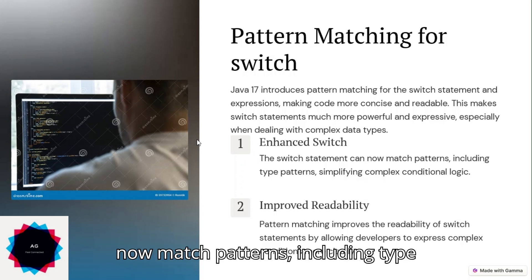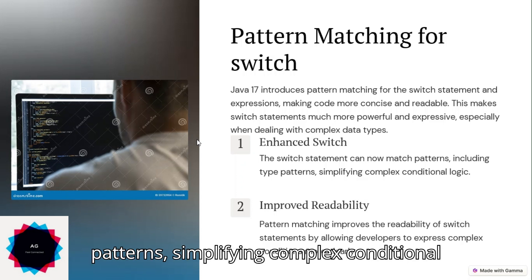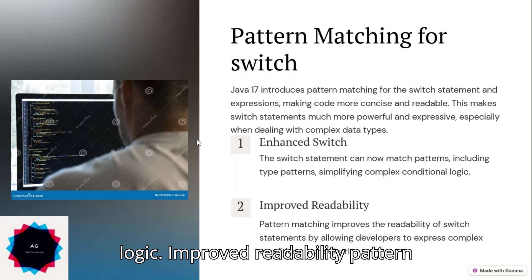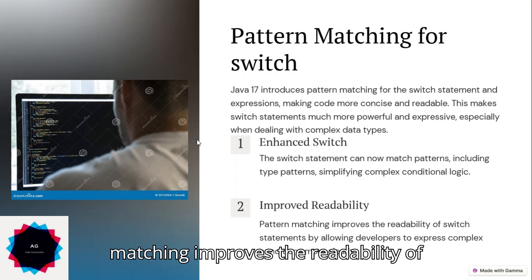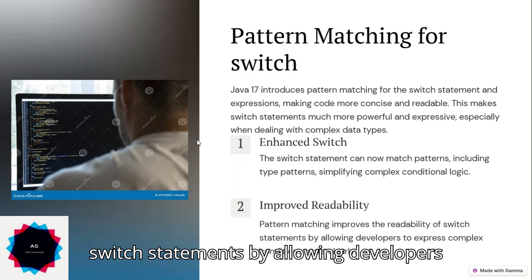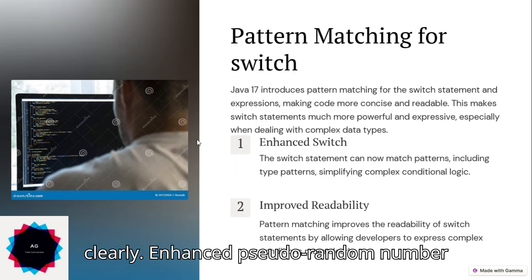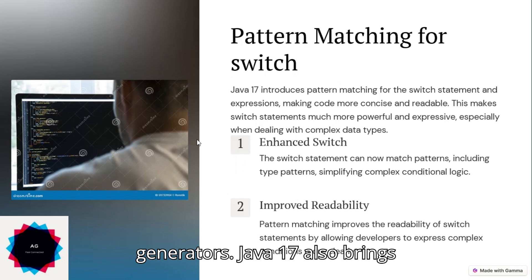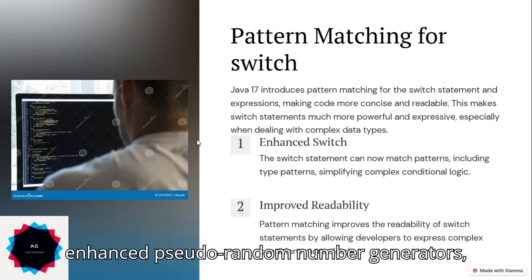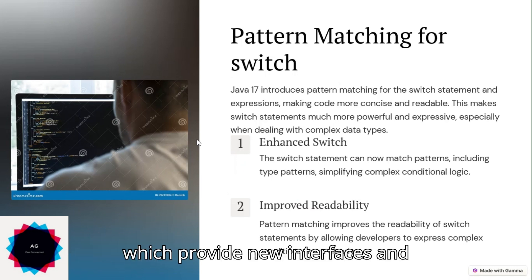The switch statement can now match patterns, including type patterns, simplifying complex conditional logic. Pattern matching improves the readability of switch statements by allowing developers to express complex conditions more clearly. Java 17 also brings enhanced pseudo-random number generators, which provide new interfaces and implementations for random number generation.